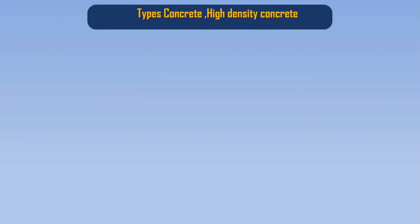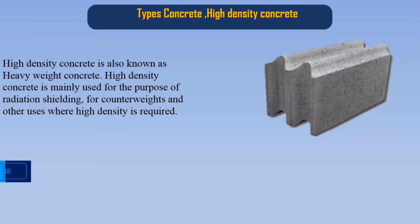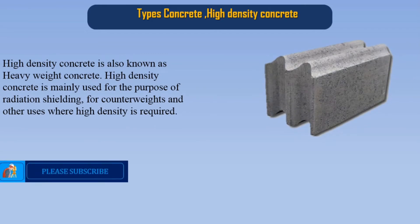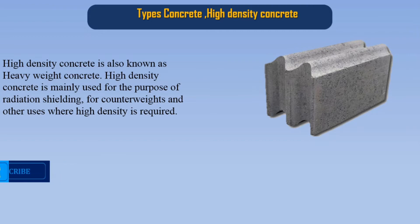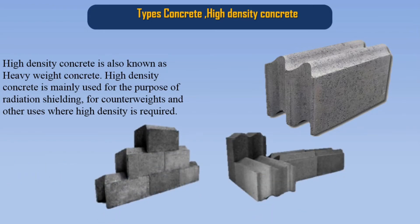High density concrete is also known as heavyweight concrete. It is mainly used for the purpose of radiation shielding, for counterweights, and other uses where high density is required.